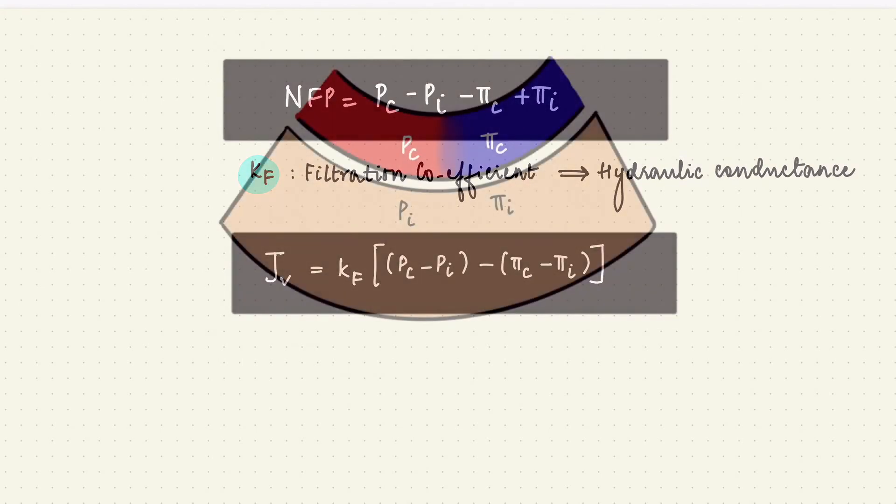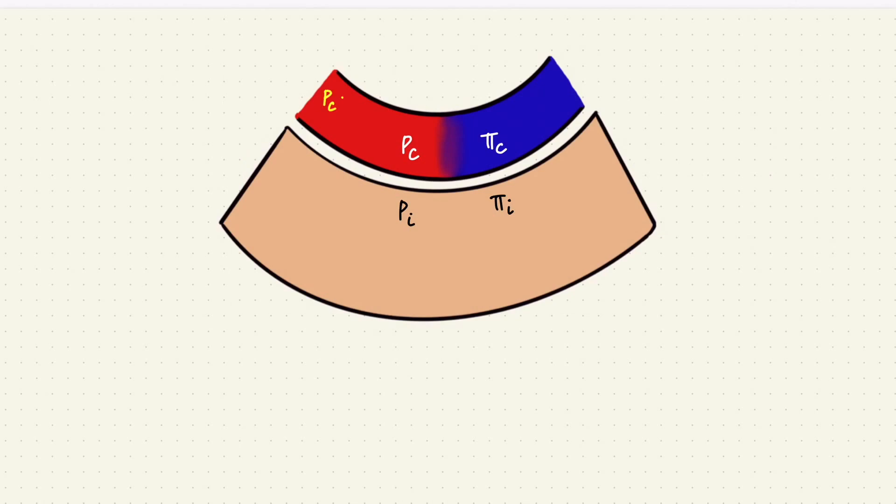Physiologically, the Pc at the arterial end is higher than the venous. So there's net filtration at the arterial end and net reabsorption at the venous end. But there's a slight disequilibrium with a little higher filtration, and the extra filtrate gets returned to circulation from the interstitium through the lymphatic vessels.